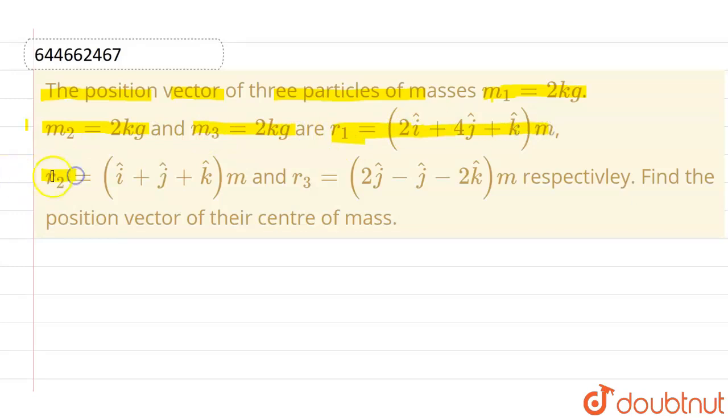r2 vector which is i cap + j cap + k cap meter, and r3 vector which is 2i cap - j cap - 2k cap meter respectively. We have to find the position vector of their center of mass.